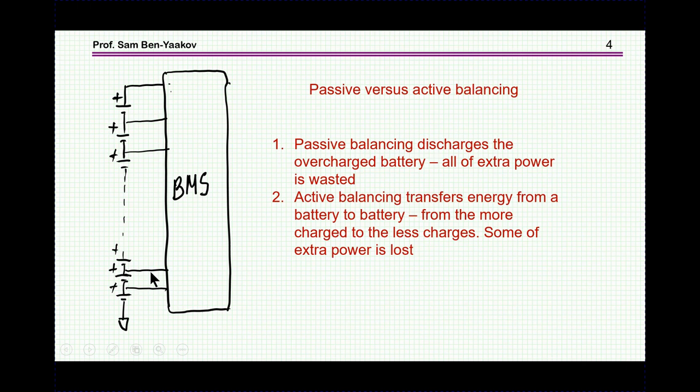There are two ways of balancing. One is using passive balancing, which I'm going to discuss in this video. In this case, we are wasting the extra power. That is, if there is a battery which is more charged than the others, we are discharging it with an external circuitry, and this power is being wasted. On the other hand, there is an active balancing method in which we transfer energy from one battery which has a higher state of charge to another battery or to other batteries which have a lower state of charge. Obviously, some of the power is lost, but some is saved because we are moving power from one battery to another.